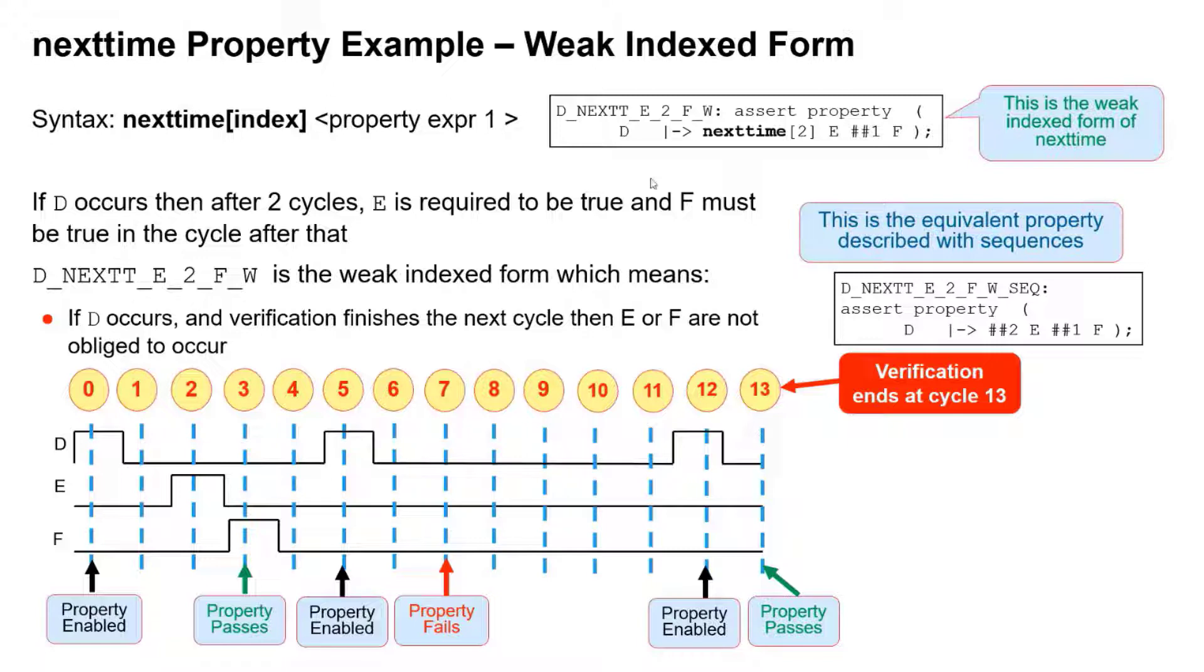d occurs again, so we have an obligation for the right-hand side to occur, and we're expecting in 1, 2 cycles e to occur, and it doesn't here. On cycle 7, we have no e, therefore that property fails.